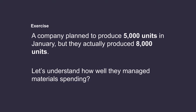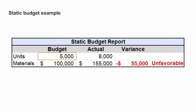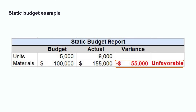Let's look at an example of how using a flexible budget when evaluating performance can be much more useful than a static budget. In this example, a company planned to produce 5,000 units for the month of January, but they actually ended up producing 8,000 units. Looking at a portion of their performance report using a static budget: based on a budget of 5,000 units, the company planned to spend $100,000 on materials. However, since they actually produced 8,000 units, they actually spent $155,000 on materials, resulting in a $55,000 unfavorable variance. This performance report is saying the company spent $55,000 more than they should have. However, we would have expected the company to spend more on materials since they produced more units than originally planned — it's entirely possible that market demand went up, requiring them to produce 8,000 units instead of 5,000. As a result, it may not be fair to measure their performance against that original static budget.